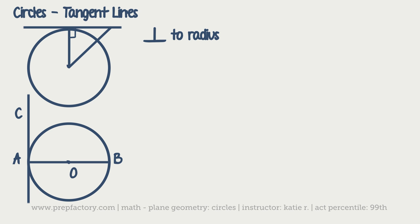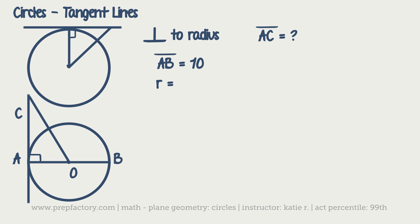Let's try a tangent line problem. We have a line tangent to circle O at point A, and we want to find the length of AC. Knowing we have a tangent line, we draw in a right triangle that uses side AC and a radius. They tell us AB equals 10. AB is also the diameter of the circle, so the radius equals 5.